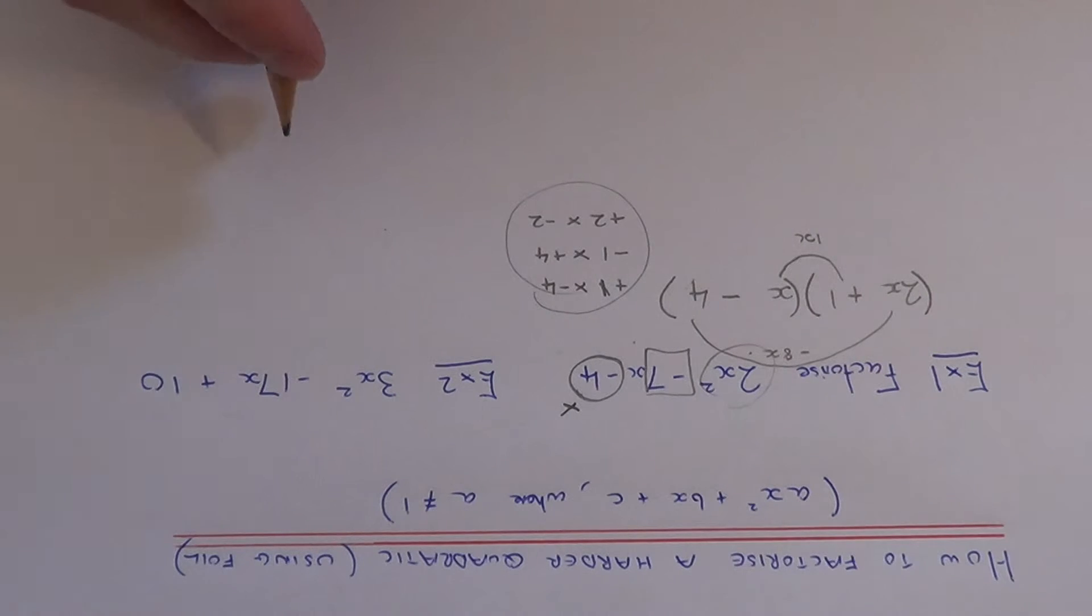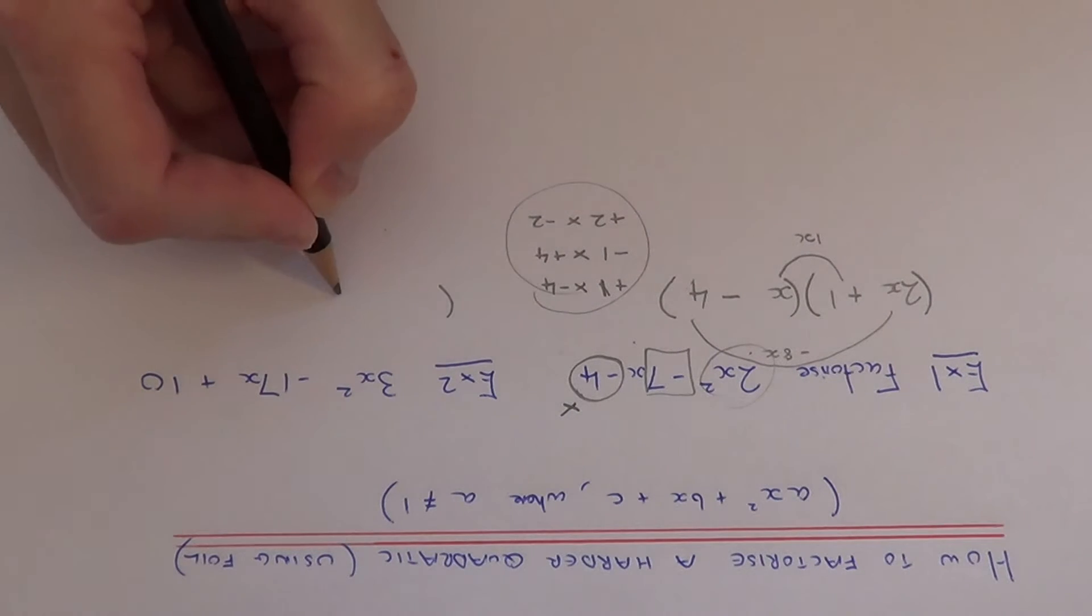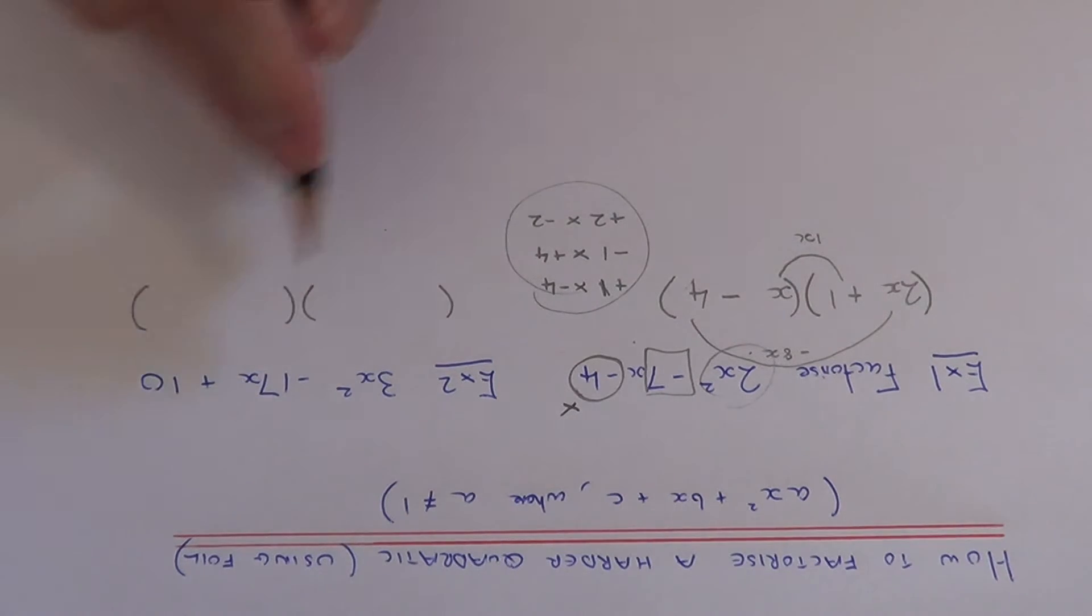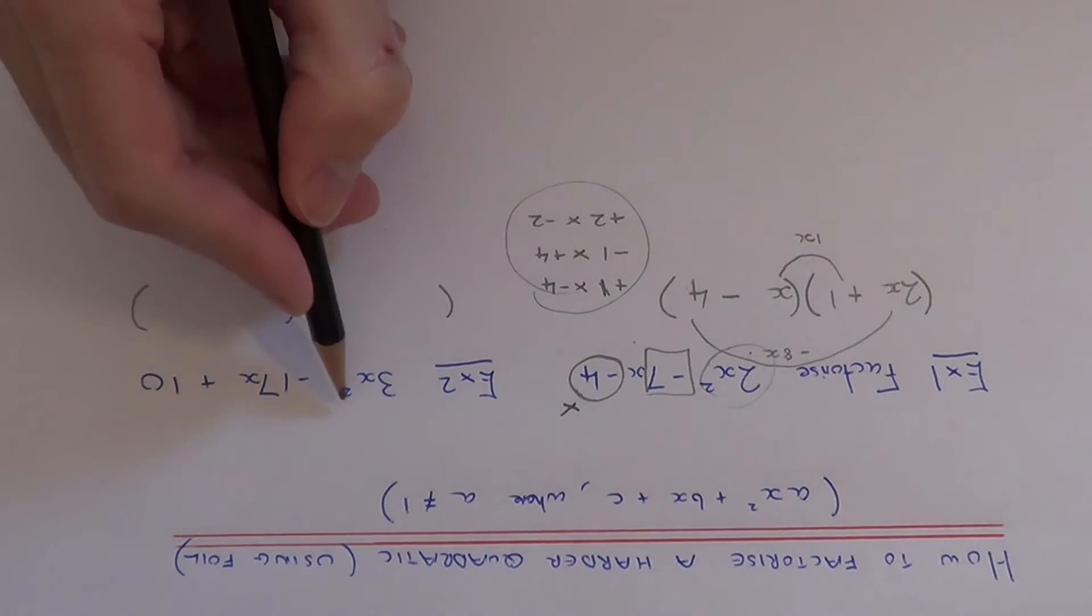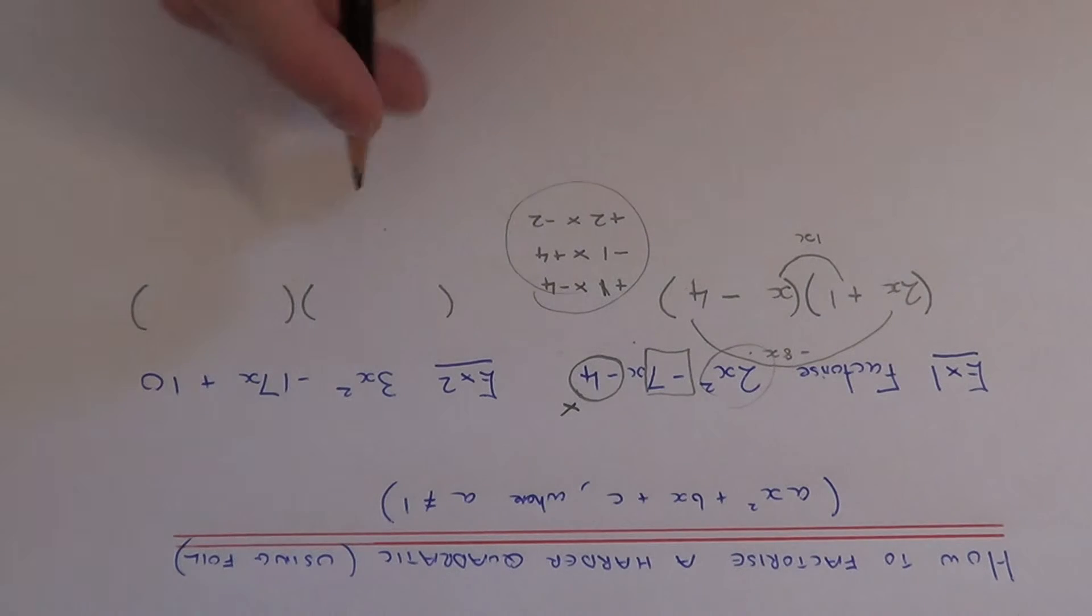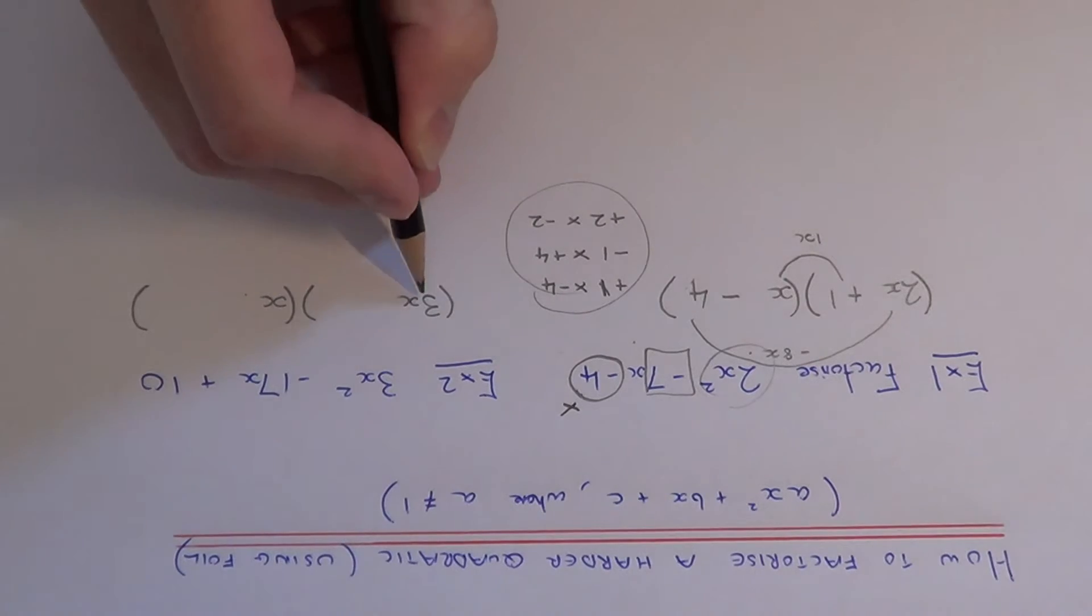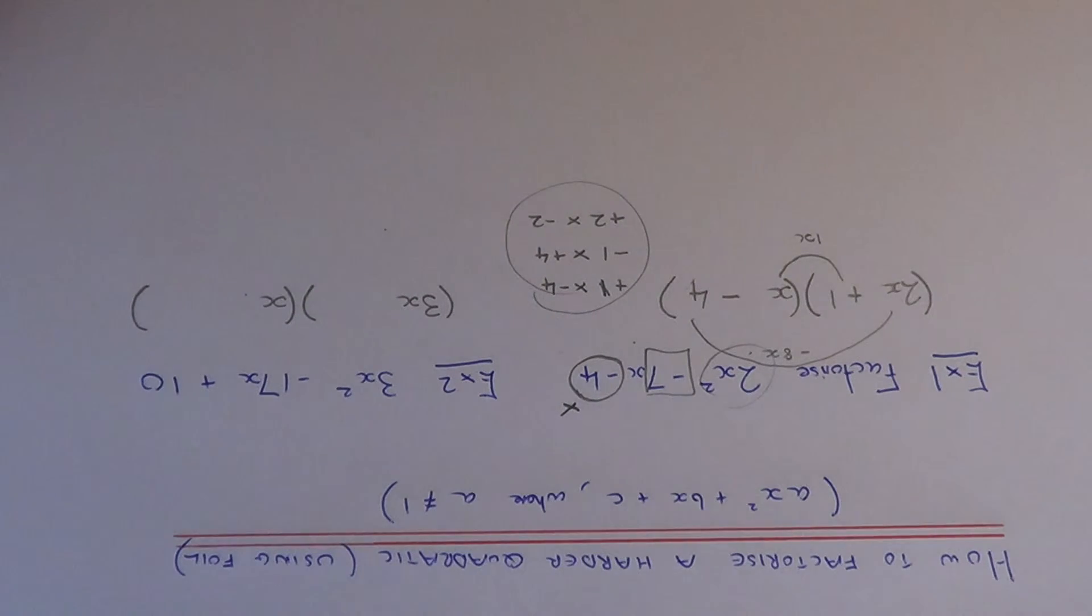Let's have a look at example 2. Again we know it goes into a double bracket because we have three terms here. Our first term is 3x squared, so at the start of the bracket we need to put 3x and x because 3x times x is 3x squared.